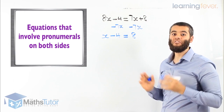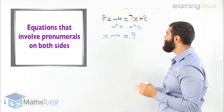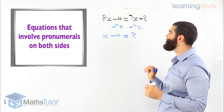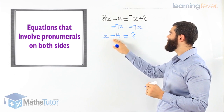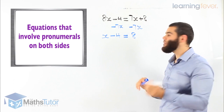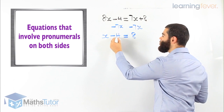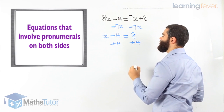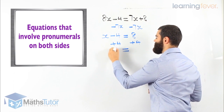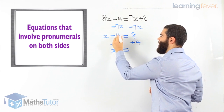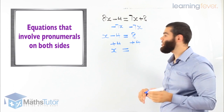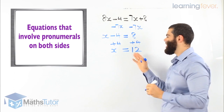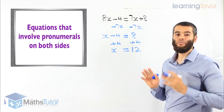What do you notice now? It's a one-step equation. So we have x minus 4 equals 8. We know minus 4 becomes plus 4 — x minus 4 plus 4 is gone, and 8 plus 4 is 12. That's our answer. Pretty simple.